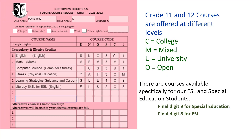At the grade 11 and 12 level, courses are offered at four different levels of study: college, mixed, university, and open. Open levels count as electives but do not count towards college or university admissions. There are also courses available specifically for our ESL and special education students. These courses are indicated by the last digit 9 in the case of special education, and the last digit 8 in the case of ESL.